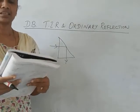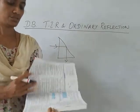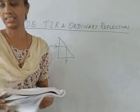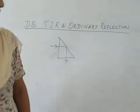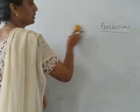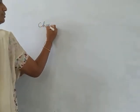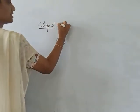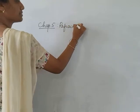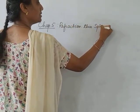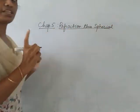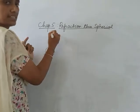We are finishing Chapter 4 and starting Chapter 5. Chapters 4, 5, and 6 are all related to light. Chapter 4 was refraction through plane surfaces; Chapter 5 is refraction through curved or spherical surfaces.